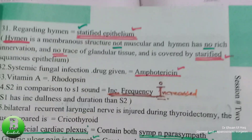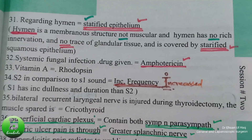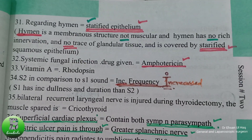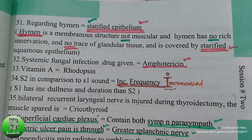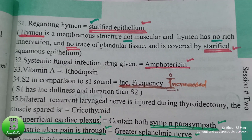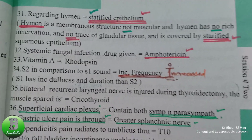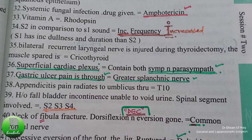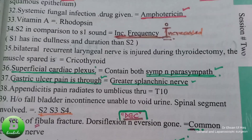In summary, the hymen has no glands, no muscles, and no innervation. It is stratified squamous epithelium.